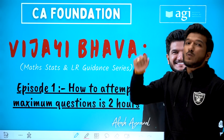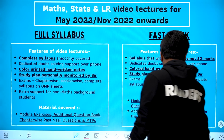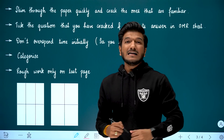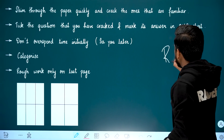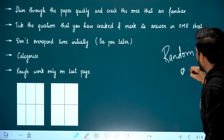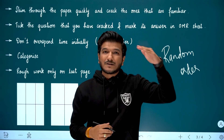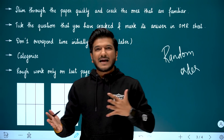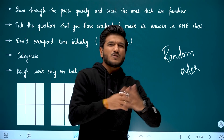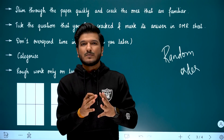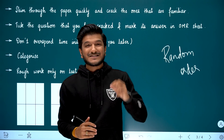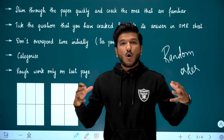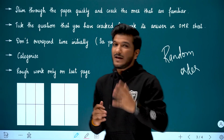How to attempt maximum questions — what are the main points you need to take care of? First of all, one thing to understand: in the Foundation 100-marks paper, the questions will be in random order. Random order means questions are not chapter-wise, not section-wise — all are mixed. Maths, Stats, and LR questions are all mixed up in the background; any stats question, any LR question will appear mixed. The hundred questions will all be in random order, so that is a very important point to know.